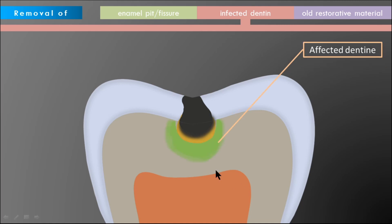Below the infected dentine there is a layer of affected dentine. Affected dentine is most often free of microorganisms, but it may have been affected by the acid released by microorganisms in the infected dentine. The inorganic components — such as hydroxyapatite crystals — may be lost, but the collagen fibers in affected dentine will be intact. So during caries removal we remove the bulk of decay and the infected dentine; the affected dentine need not be removed.